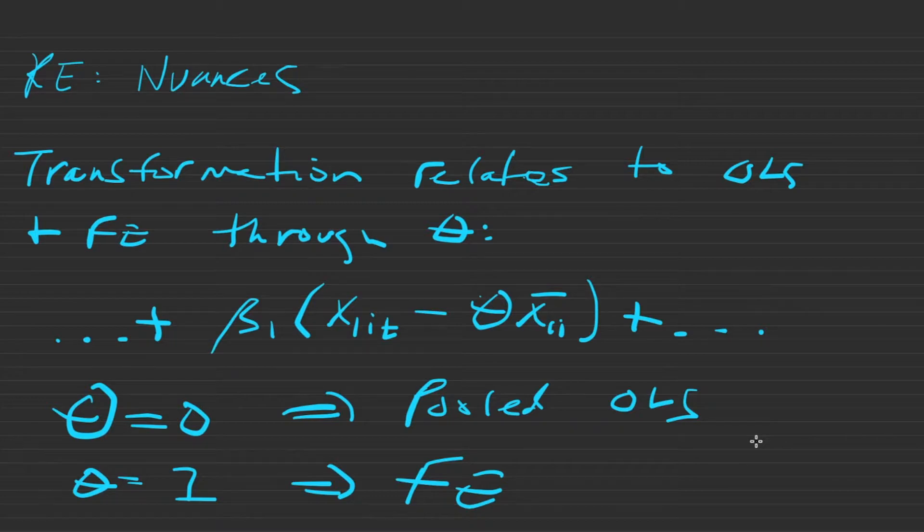So the value of theta determines to which estimator, whether pooled OLS or fixed effects, random effects will be closer.